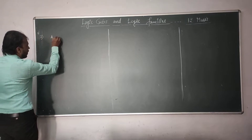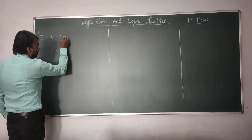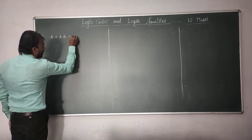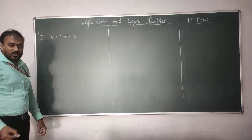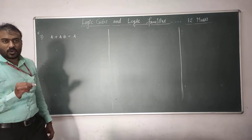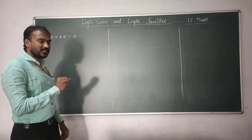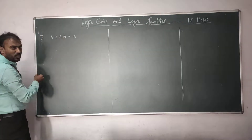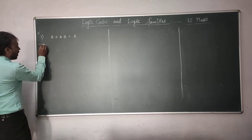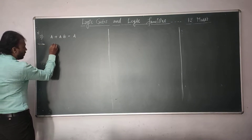The first special law is: A plus AB is equal to A. Let us see whether both sides are really equal to each other or not.